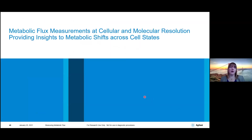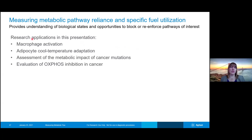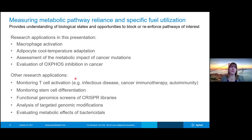With that, I'll summarize the examples I've gone over in this talk, and especially want to highlight the fact that these metabolic flux measurements really provide insights into the metabolic shifts across different cell states. I showed a bunch of different research applications, but there are also a lot of other research applications that can be used for these technologies. We can monitor T cell activation, particularly in infectious disease and cancer immunotherapy, monitor stem cell differentiation, and there's a huge promise for using these techniques to look at functional genomic screens of different CRISPR libraries.